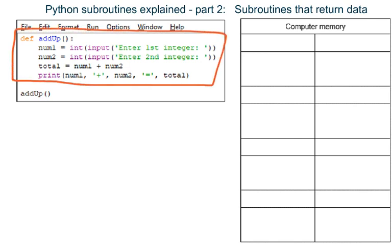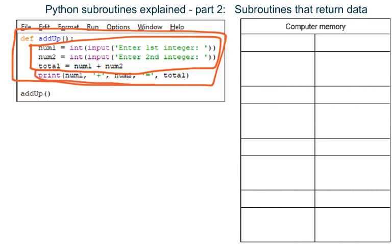Two numbers are added together inside the subroutine, and the total of those two numbers is also output inside the subroutine.